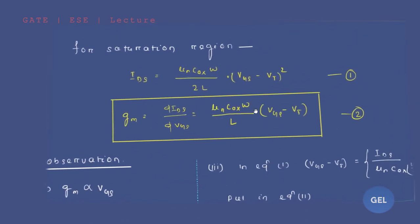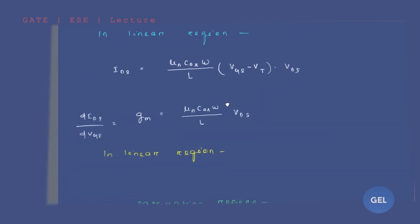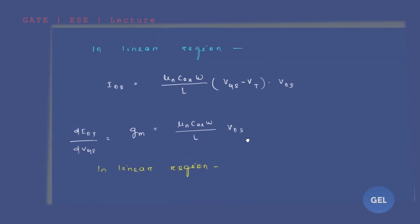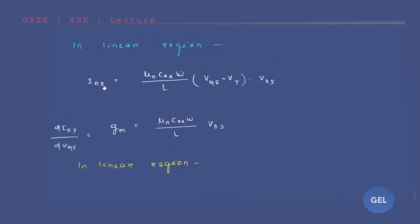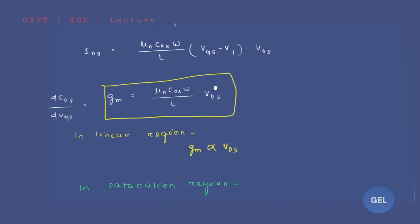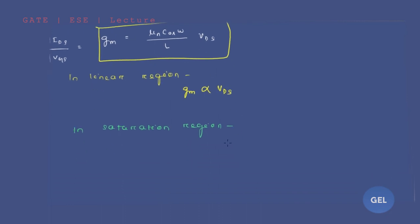Now let's move to the linear region — it's a very simple analysis. In the linear region, the IDS value has a known formula. Taking the derivative dIDS/dVGS gives the GM for the linear region. In the linear region, GM is directly proportional to VDS — the output voltage. But in the saturation region, GM is proportional to the input voltage VGS. That's the key difference.